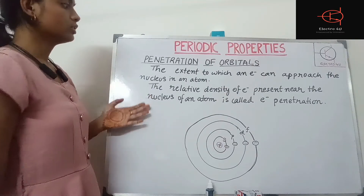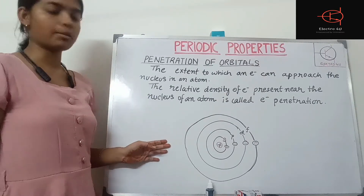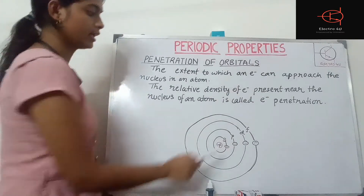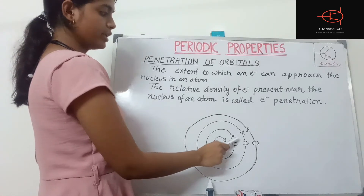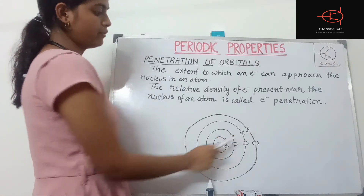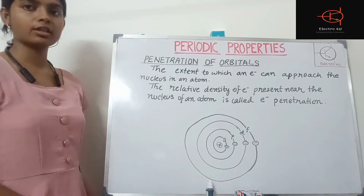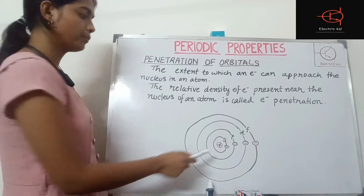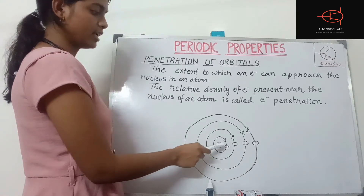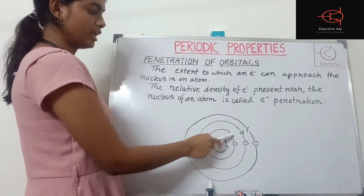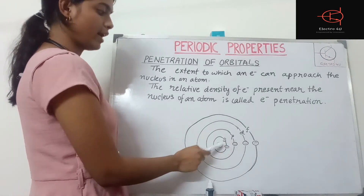Here we can see in this example that these are the orbitals S, P, D, and F around the nucleus. S is the nearest one, then P, then D, then F.